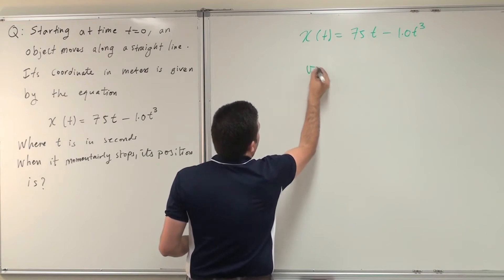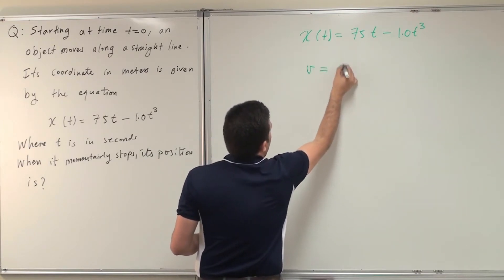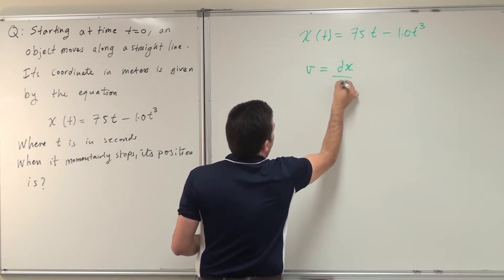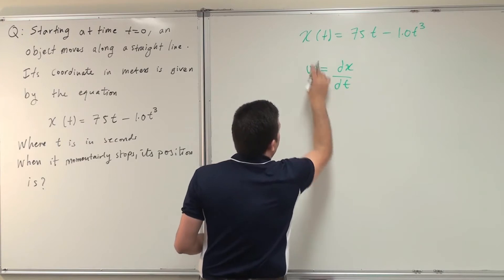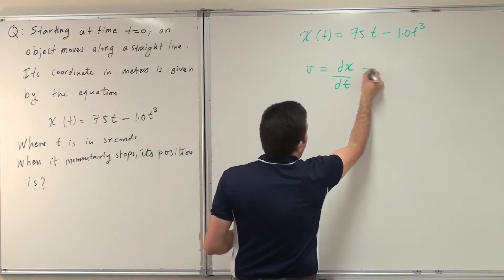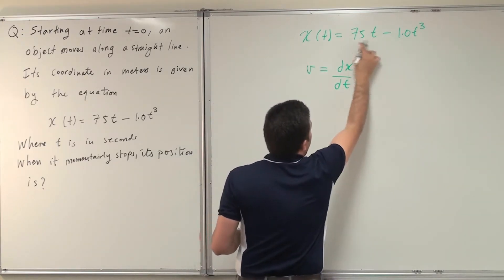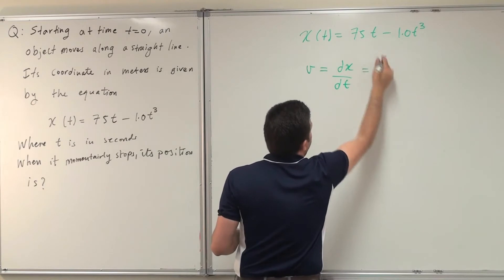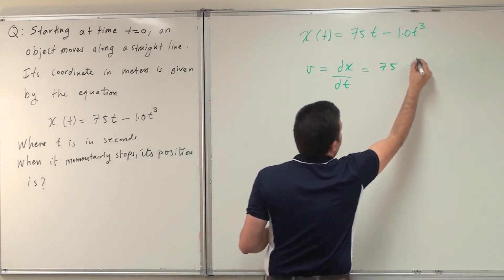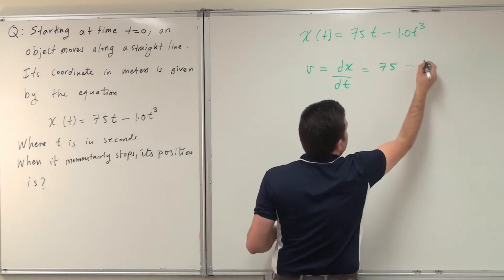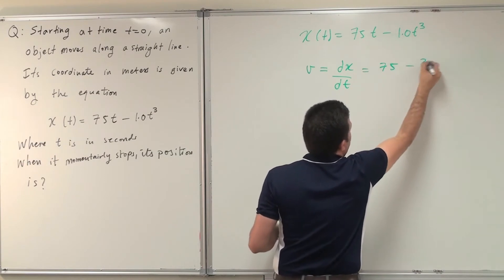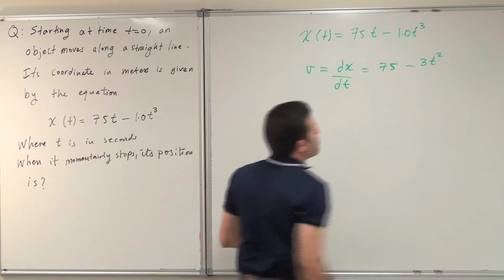Velocity equals dx by dt, or the derivative of the coordinate, which equals the derivative of 75t is 75, minus the derivative of t cubed — we drop the power and reduce the power by 1.